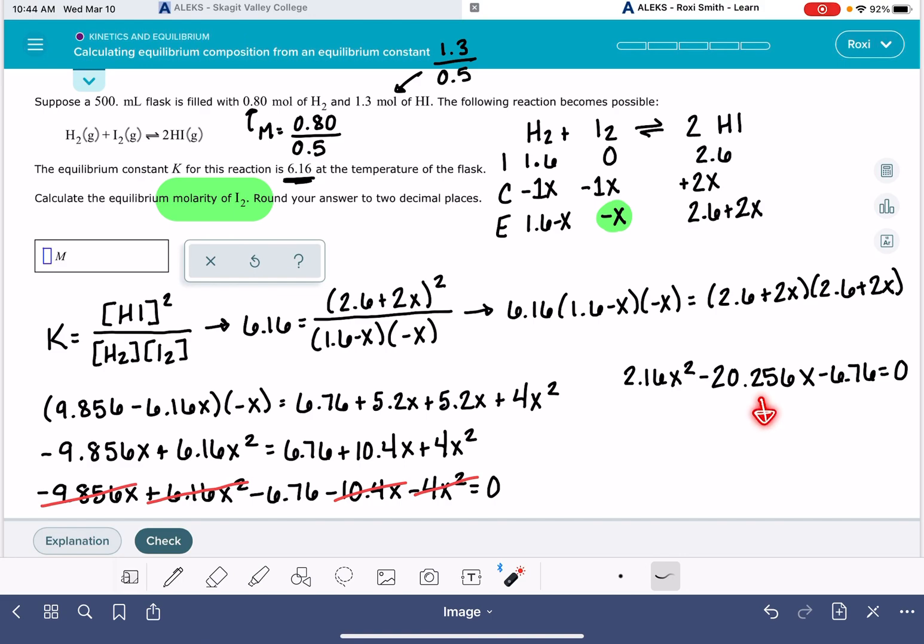Now from here, you could use the quadratic. You could plug these numbers in and solve. Or if your calculator has a polynomial solver, you could do that. Or you can just go to a website and Google polynomial solver. There's going to be one that pops up. I'm using my calculator to do this. The first term is 2.16. The second term is negative 20.256. And the last term is negative 6.76.